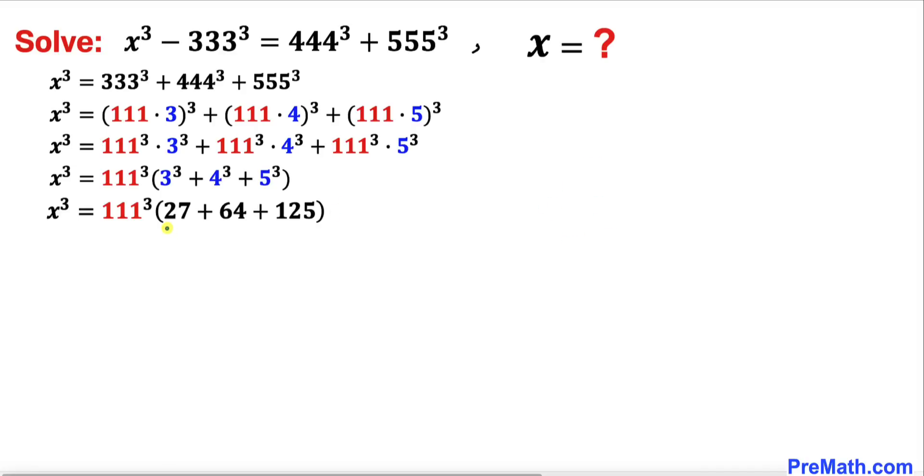Now let's add these three numbers inside the parentheses: 27 + 64 + 125. If we add them we are going to get 216.